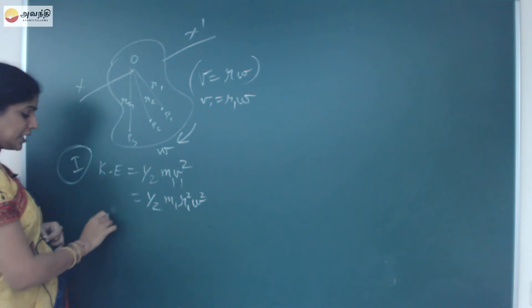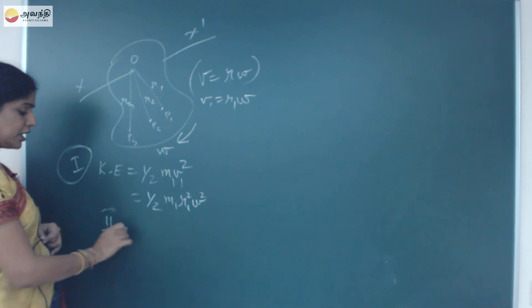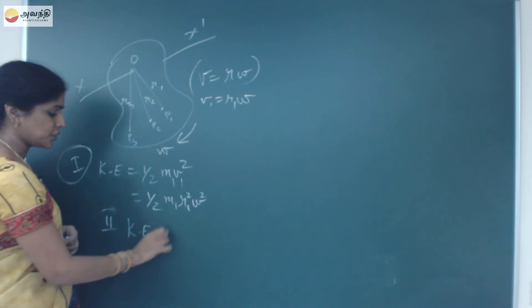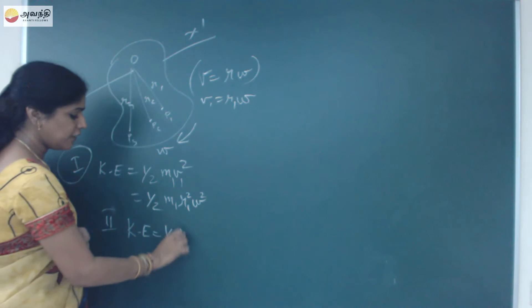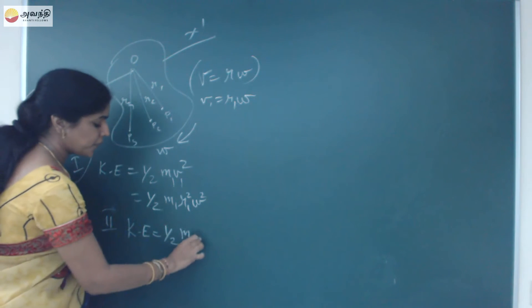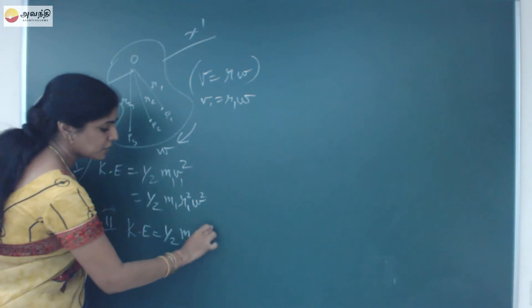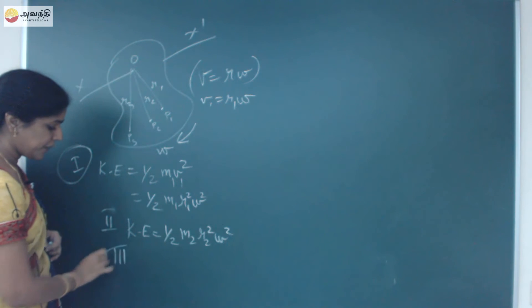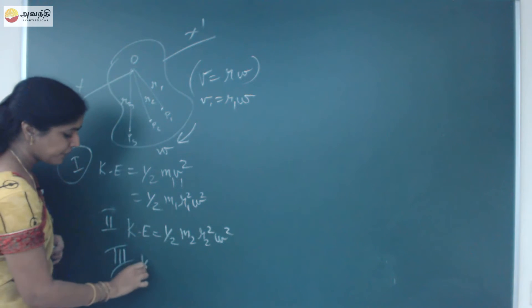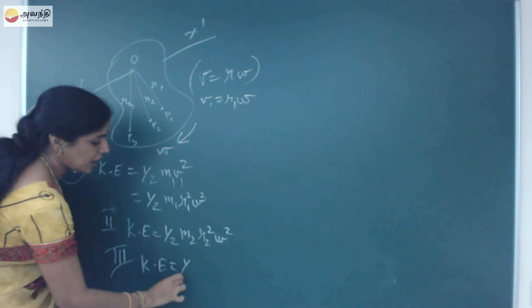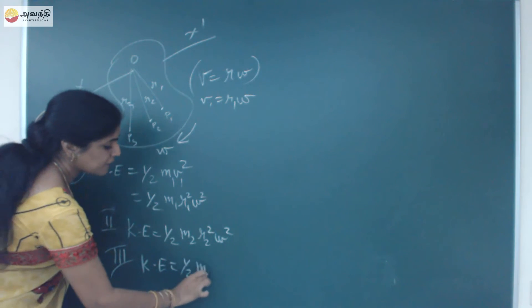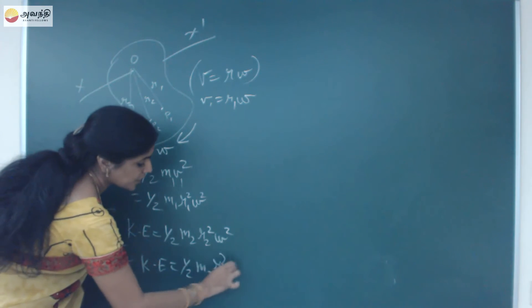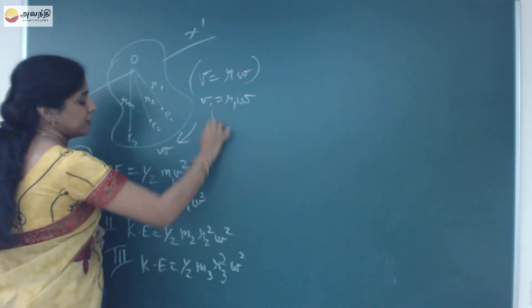Similarly, for the second particle, kinetic energy is equal to half m2 r2 squared omega squared. For the third particle, kinetic energy is equal to half m3 r3 squared omega squared. This is written for the individual particles.